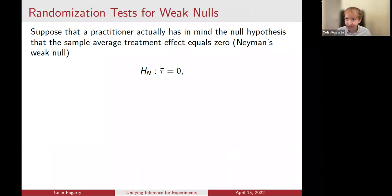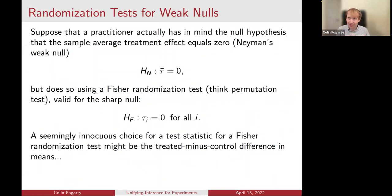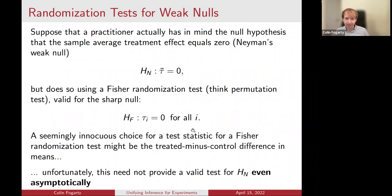We'll be considering the finite population model for causal inference. Suppose that the practitioner actually has in mind the null that the average of the treatment effects for the individuals in the experiment equals zero, but ends up testing this using a Fisher randomization test, which looks a lot like a permutation test. A seemingly innocuous choice of test statistic for testing whether there's no effect on average might be a permutation test based on the difference in sample means — enumerating the permutation distribution looking at the difference in treated means and control means. Unfortunately, as we'll discuss, that doesn't even provide a valid test for this weak null of no effect on average, even asymptotically.